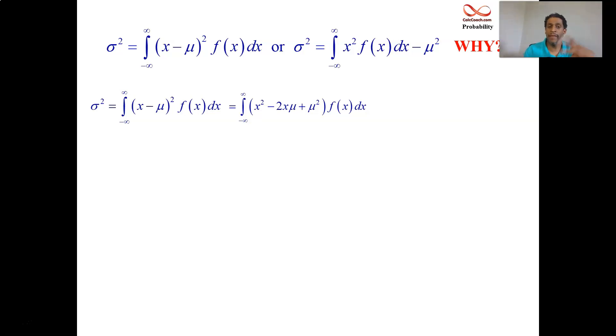Nothing illegal so far. Just some algebra. And now we'll distribute. So we'll have x²f(x) and -2xμf(x) plus μ²f(x). All of this is its own separate integral from minus infinity to infinity. Nothing illegal yet, just some algebra. Now look at that last one. Focus your attention on the last integral. The μ², the mean squared is a constant. You could factor that out, pull it outside the integral, I mean. And then that integral should look very familiar.